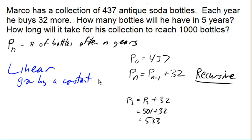When we have recursive linear growth, we can always write the equation in the form Pₙ. So the population in year N is always gonna be the population in the previous year plus some D.